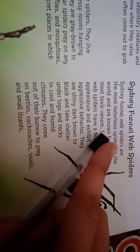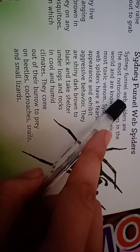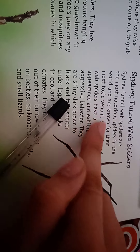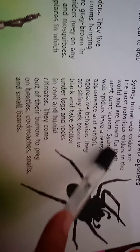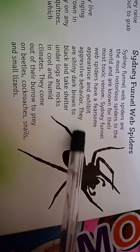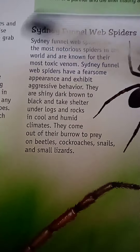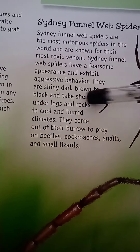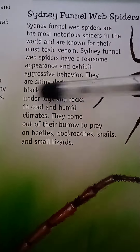Now we will look at Sydney's Funnel Web Spiders. Sydney's Funnel Web Spiders are most unusual spiders in the world and are known for their aggressive behavior. They have a firm, glossy appearance and display aggressive behavior. They are shiny dark brown to black and shelter under logs and rocks in cool and humid environments. They come out of their burrows to prey on cockroaches, snails, and small lizards.